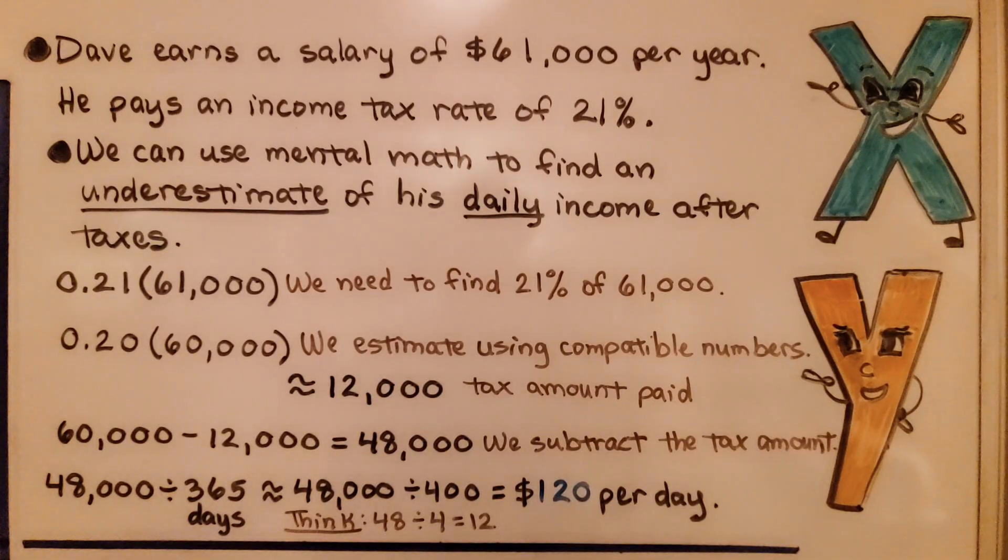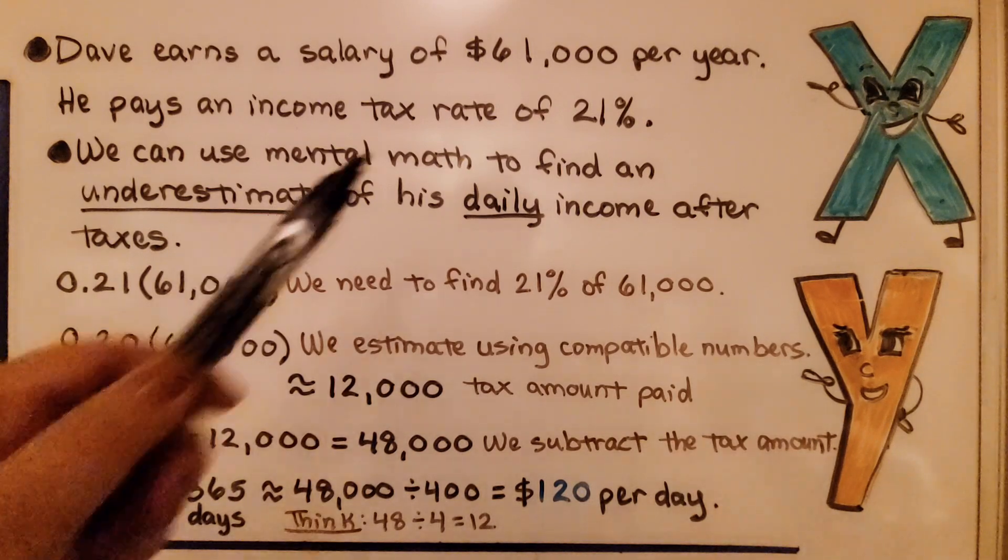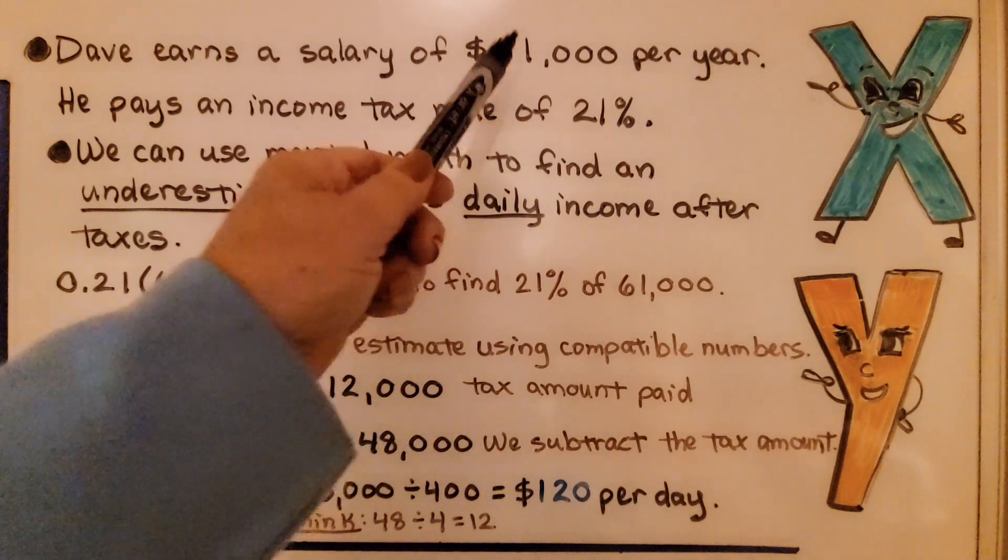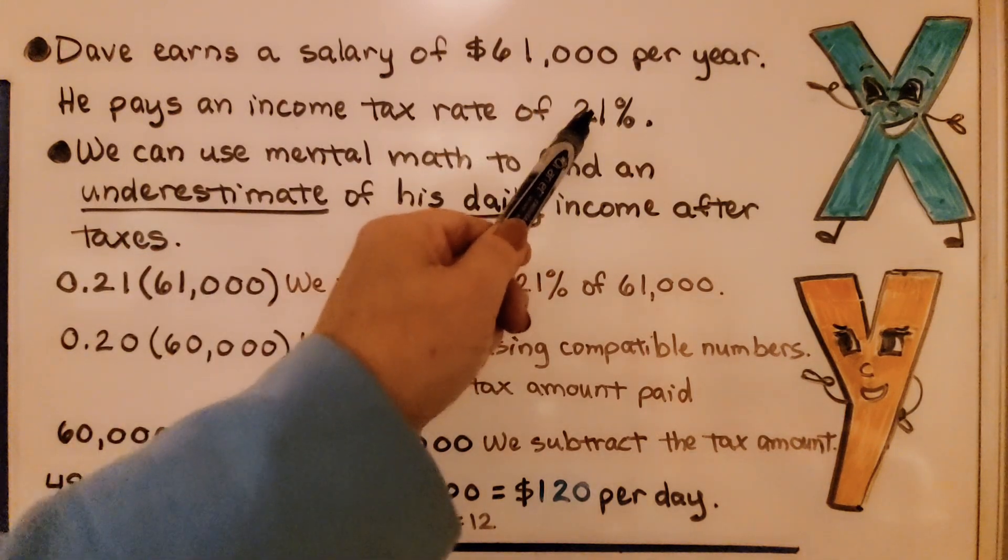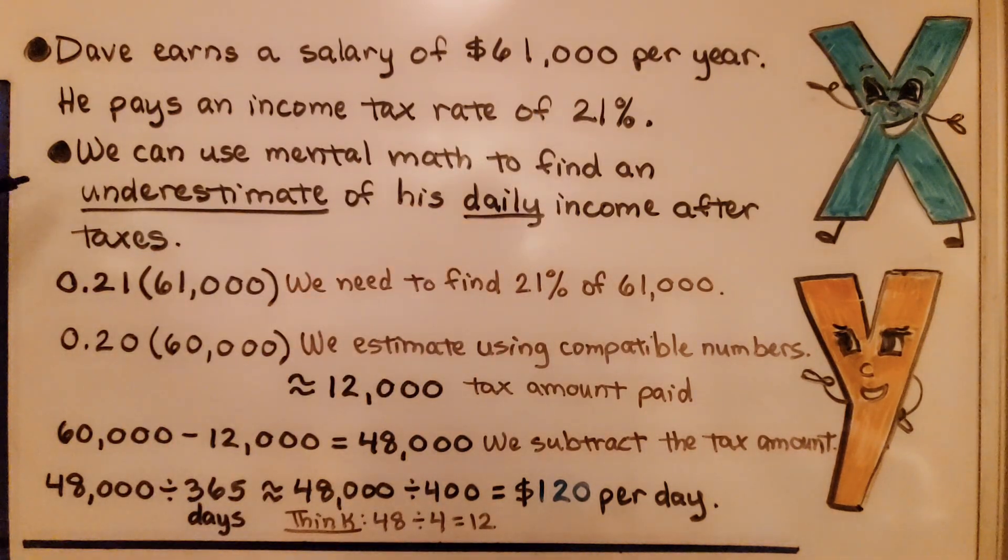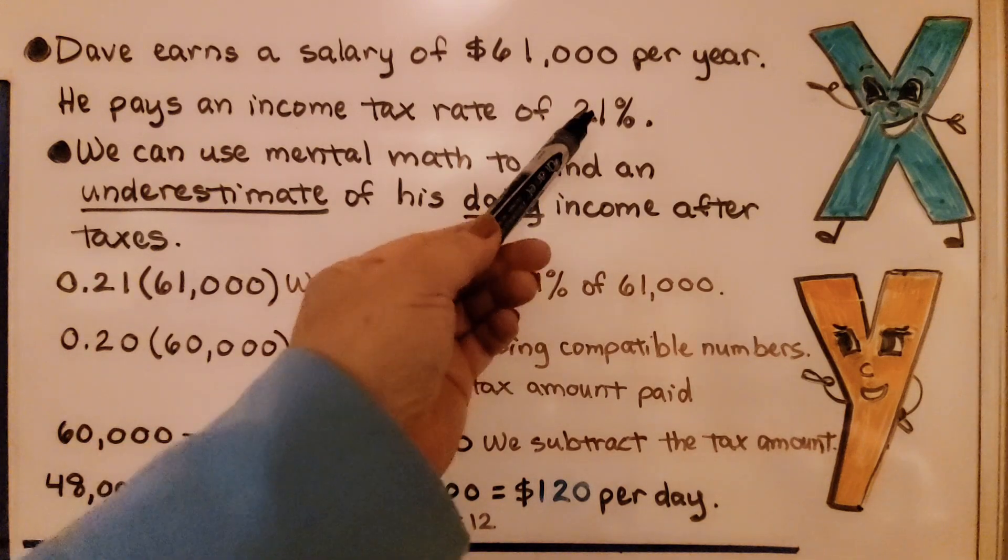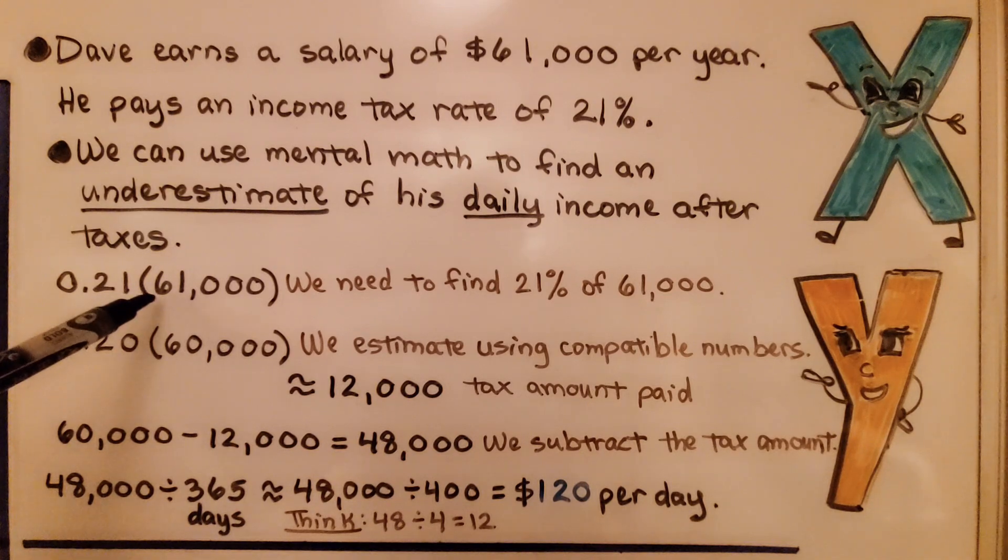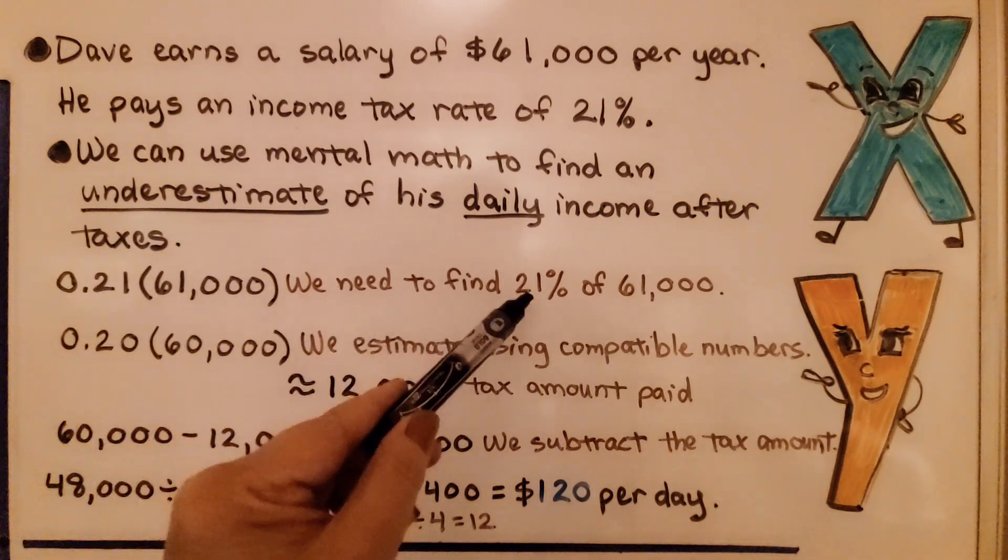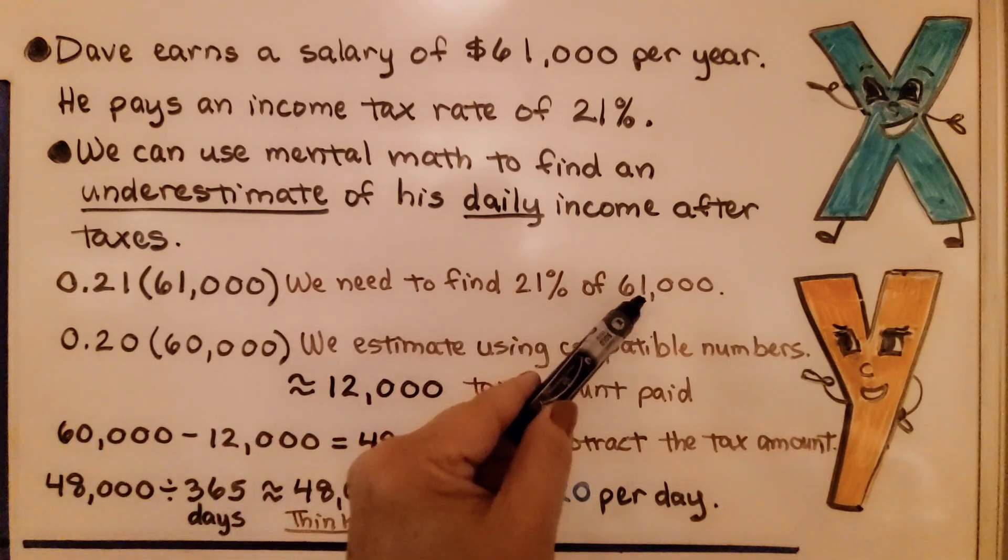Here we have a word problem. Dave earns a salary of $61,000 per year. He pays an income tax rate of 21%. We can use mental math to find an underestimate of his daily income after taxes. We write 21% as a decimal as 0.21. We need to multiply it by $61,000. We need to find 21% of $61,000.